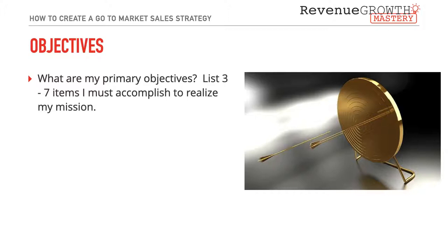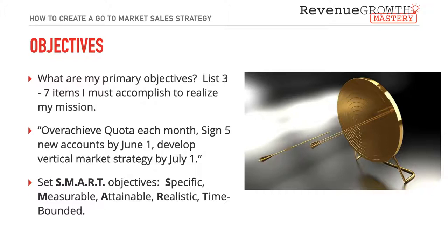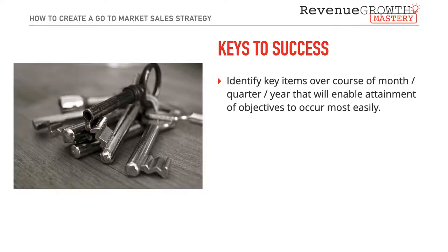After the mission comes objectives. What are my primary objectives? In this section, list three to seven items you must accomplish to realize your mission. Examples include overachieving quota each month, signing five new accounts by June, or developing a vertical market strategy by July 1st. Whatever your goals are, make them SMART — an acronym for Specific, Measurable, Attainable, Realistic, and Time-Bounded.